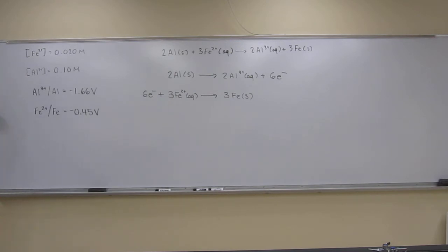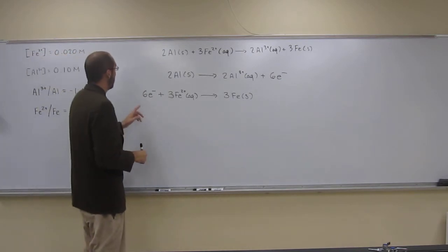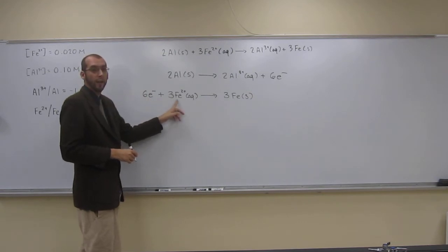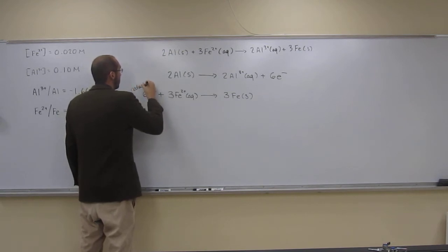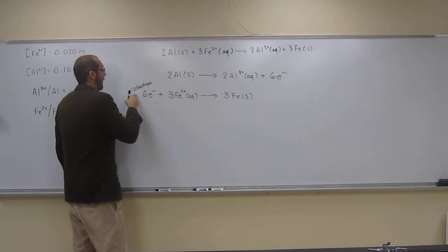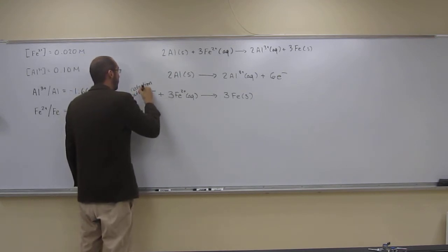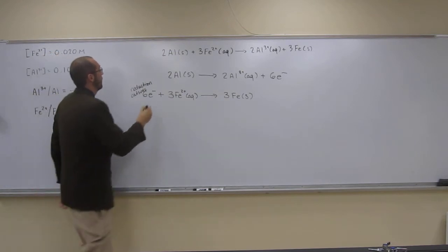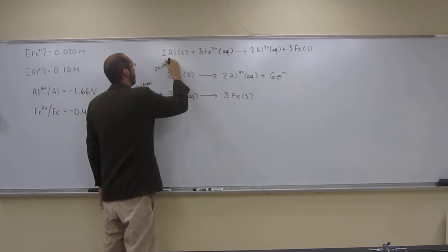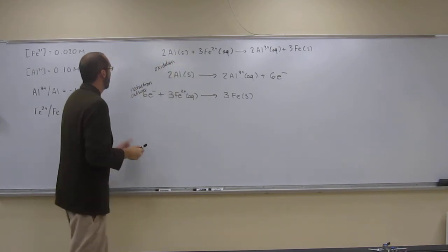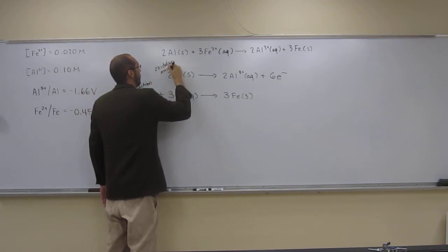So now we can identify which is the reduction reaction and which is the oxidation reaction. Remember, reduction is gaining electrons. So if we look here, the 6 electrons are being added to the iron, so that's gaining the electrons, so that's being reduced. So this is the reduction reaction, and that happens at the cathode. Of course, if that's the reduction, then that must be the oxidation, which happens at the anode.